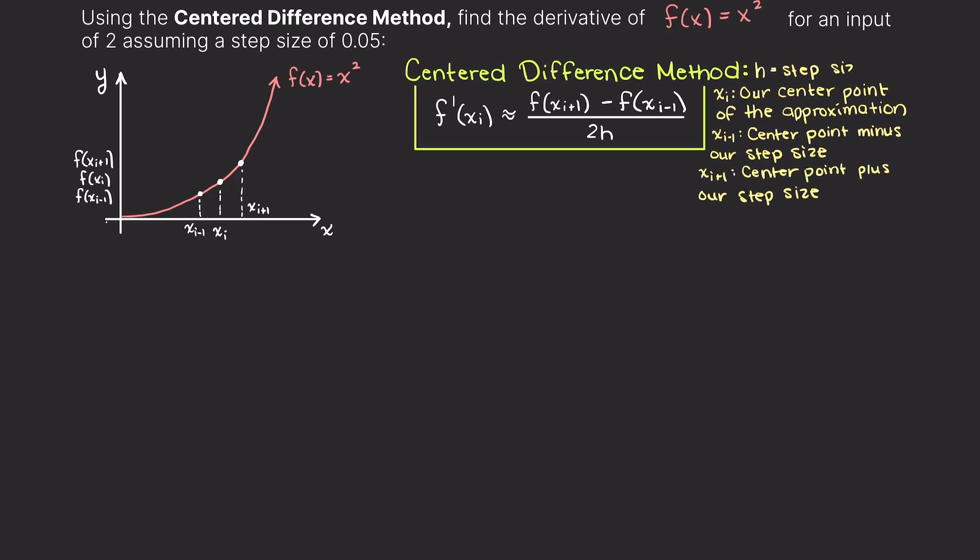Now all we need to do is some evaluations of our function. Let's evaluate our function of x² at 2.05 and 1.95.